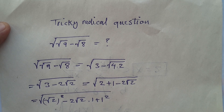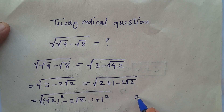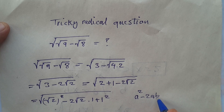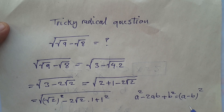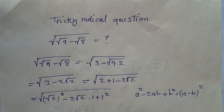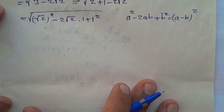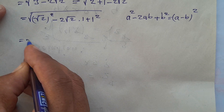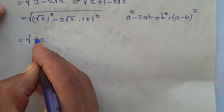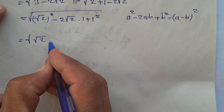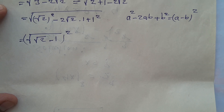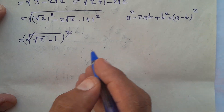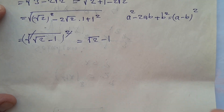This is in the form of a² minus 2ab plus b², which equals (a minus b)². So this can be written as square root of (square root of 2 minus 1) squared, and these cancel out to give square root of 2 minus 1.